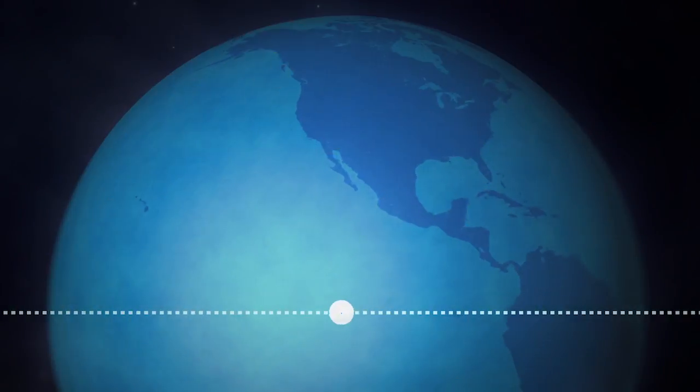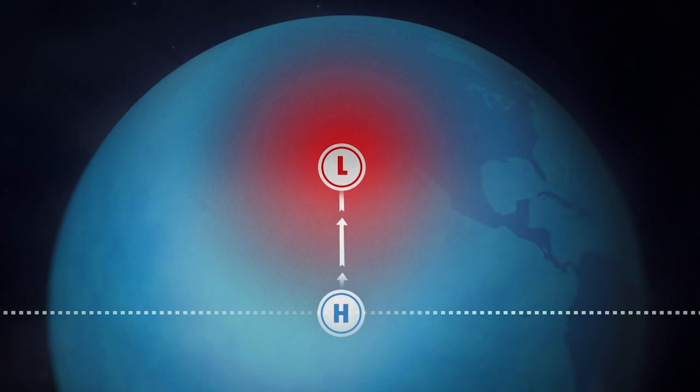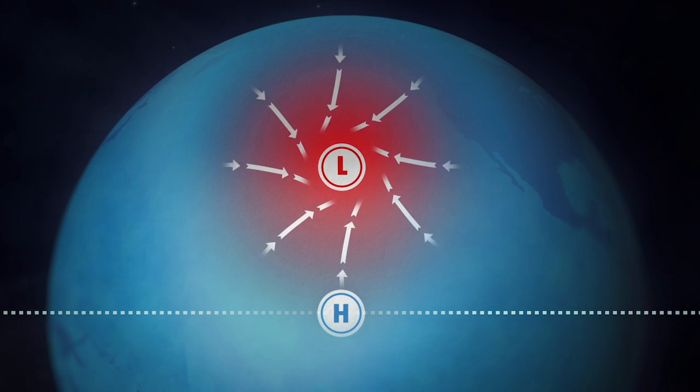and in the Northern Hemisphere, as air moves from high to low pressure, it's deflected to the right. This is why hurricanes spin counterclockwise.